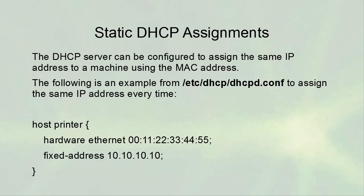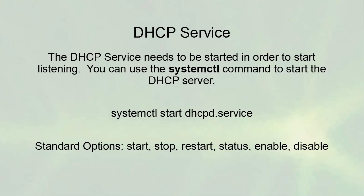In addition to handing out a range of addresses, you can also assign static addresses. The DHCP server can be configured to assign the same IP address to a machine based on its MAC address — very common when a machine must always come up with the same address because it provides services. For example, a printer with MAC address 00:11:22:33:44:55 could be assigned a fixed address of 10.10.10.10. You place that inside the subnet section so it also receives the router and DNS information.